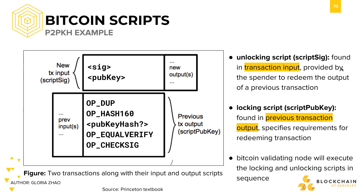But how do we actually implement this functionality? With unlocking and locking scripts. Unlocking scripts are scripts that you provide in your input when you want to spend from a previous transaction, allowing you to redeem the associated UTXOs. You provide the signature and your public key, which are needed to prove your identity and to unlock the transaction output. Your public key is then hashed and checked against the address that owns the UTXO. Because you provided a signature, the script is called script-sig.